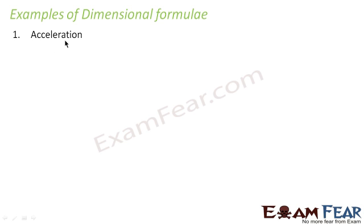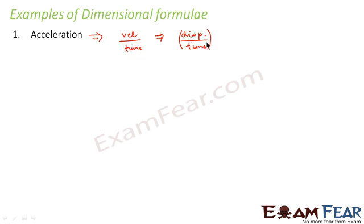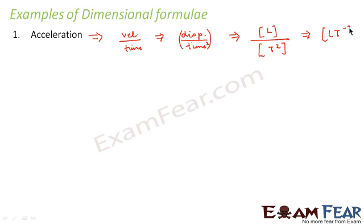Let us find the dimensional formula for acceleration. Acceleration equals velocity per unit time, and velocity is displacement per unit time, so acceleration is displacement per unit time squared. Displacement is represented by L and time by T, so the dimensional formula for acceleration is L·T⁻².